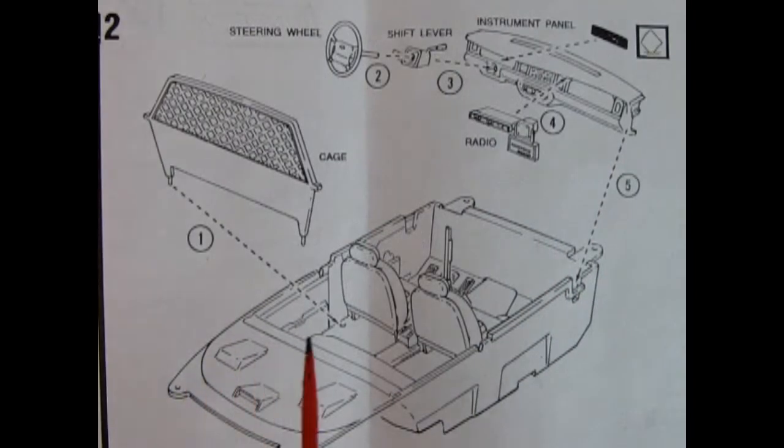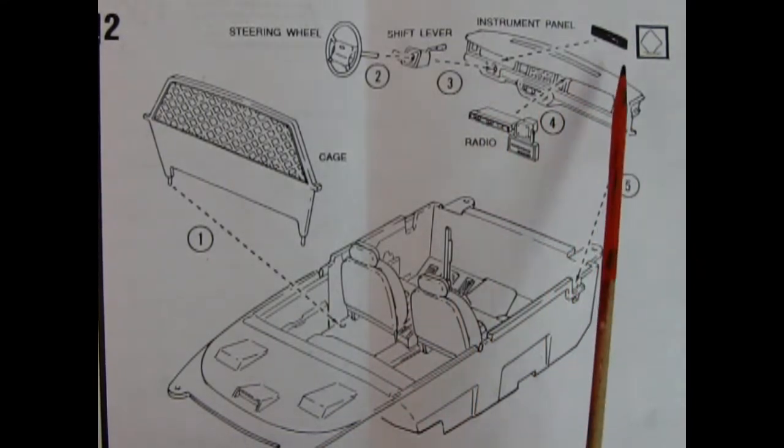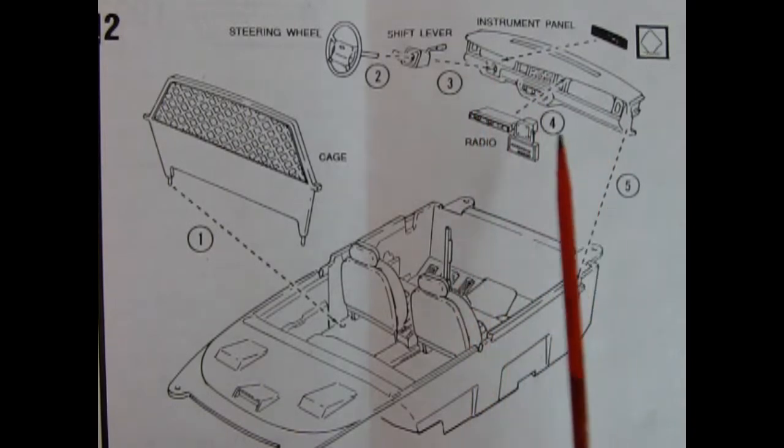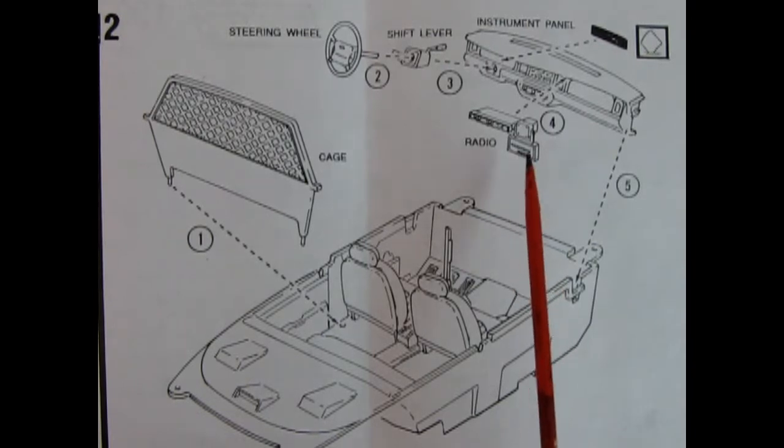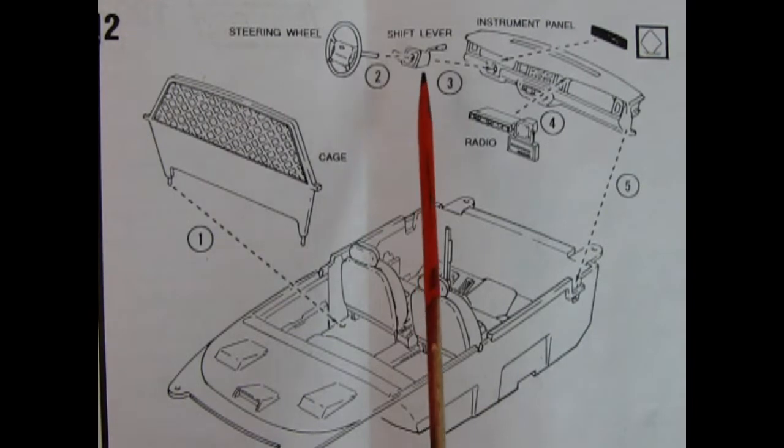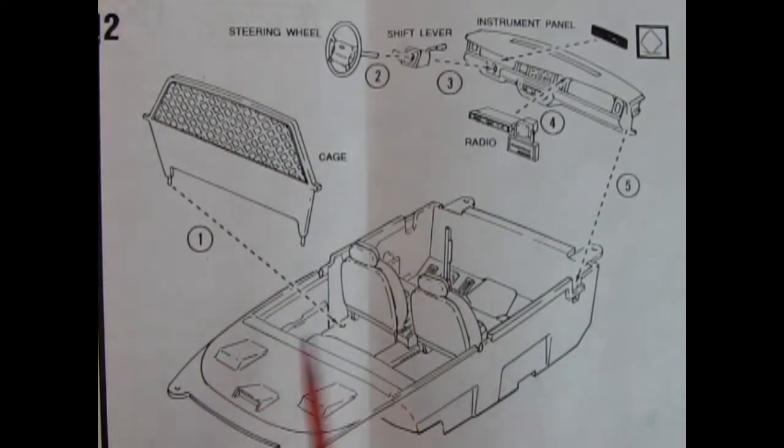Now here in panel two we complete our interior with the cage in the back. That's to protect our officers from the criminals that would be in the back there, the perpetrators. And then here we've got our dashboard. You get a decal for the instrument panel. Here you get the radio so you can listen to Sabotage by the Beastie Boys. Actually you should be really listening for police signals. There's the shift lever and the steering wheel. So all this goes together with panel one and you get your complete police interior package.